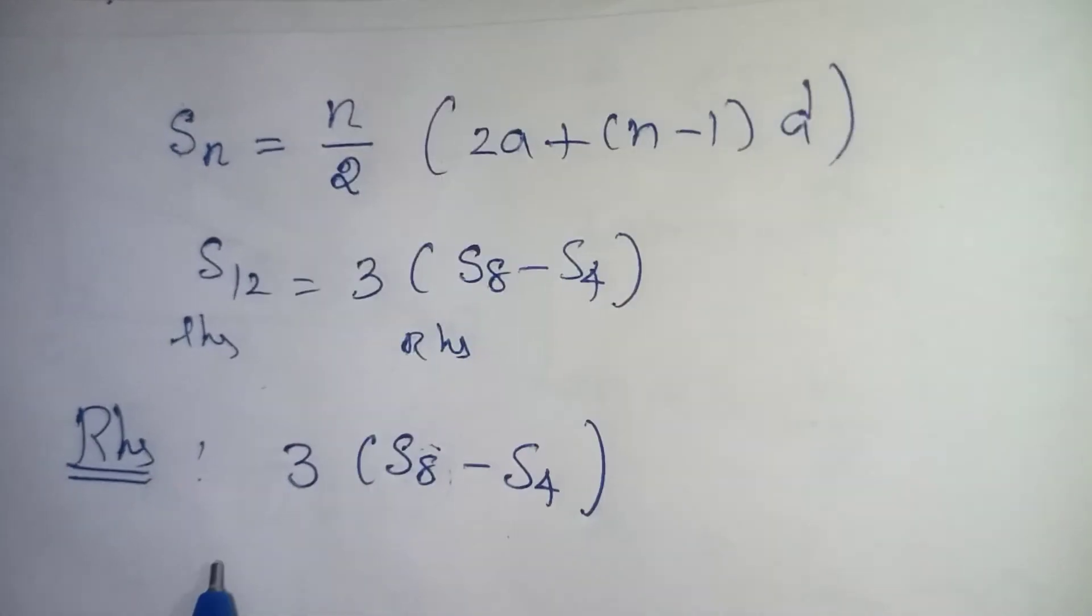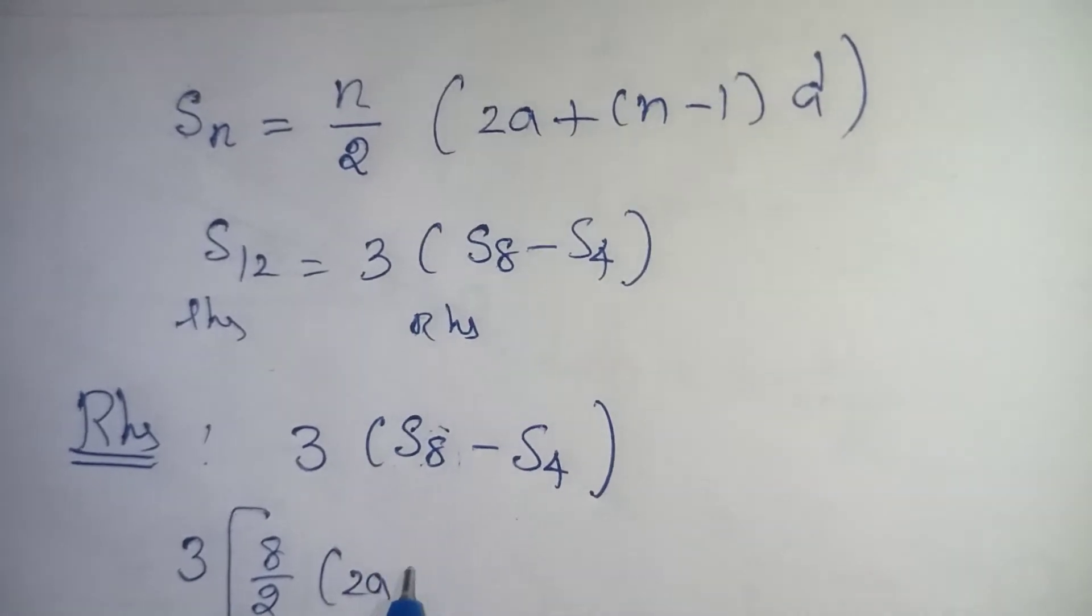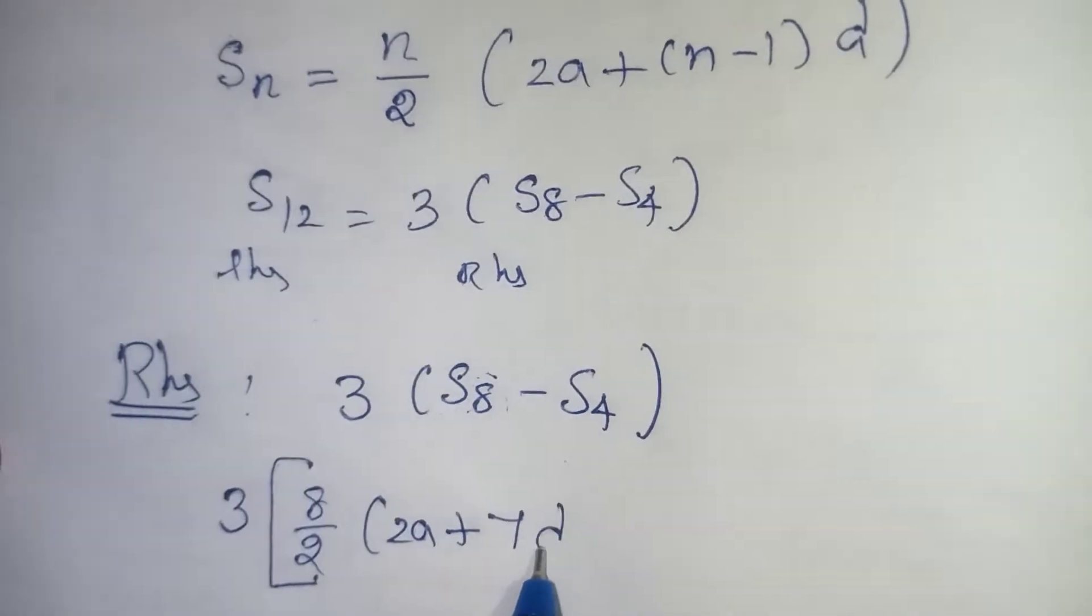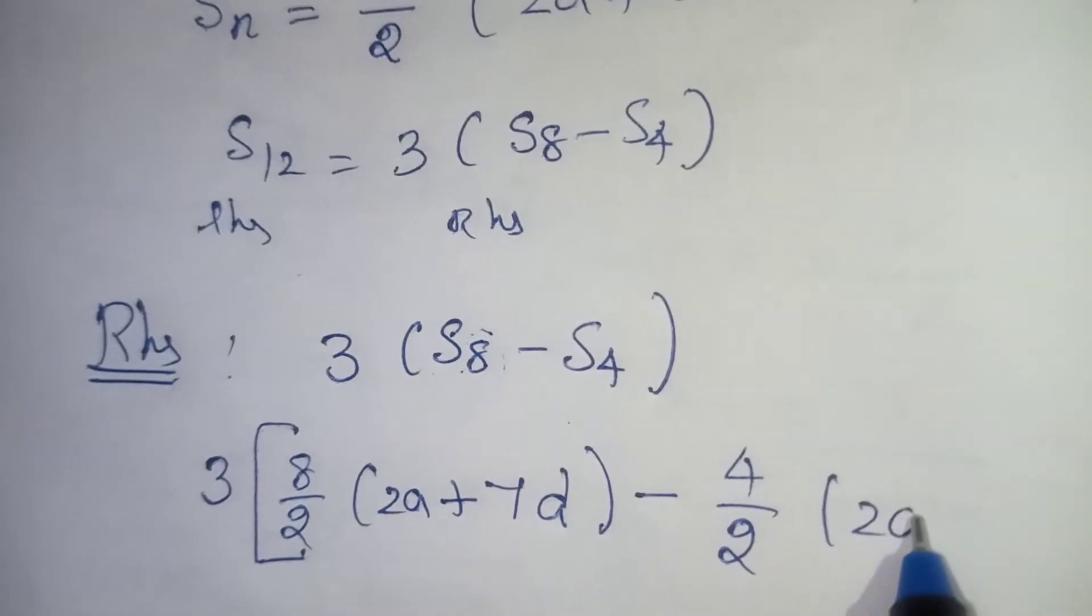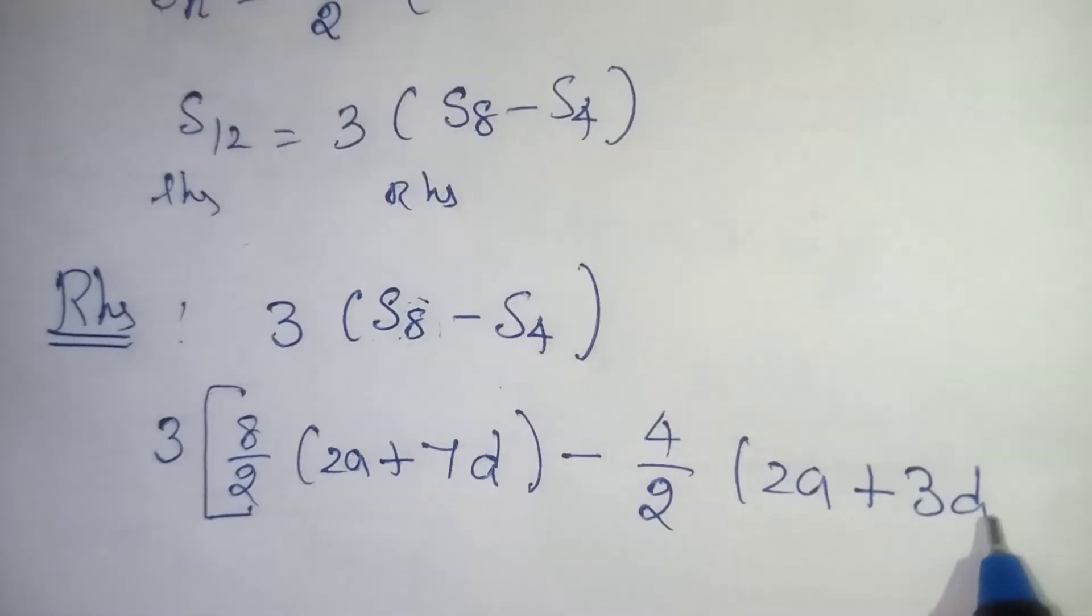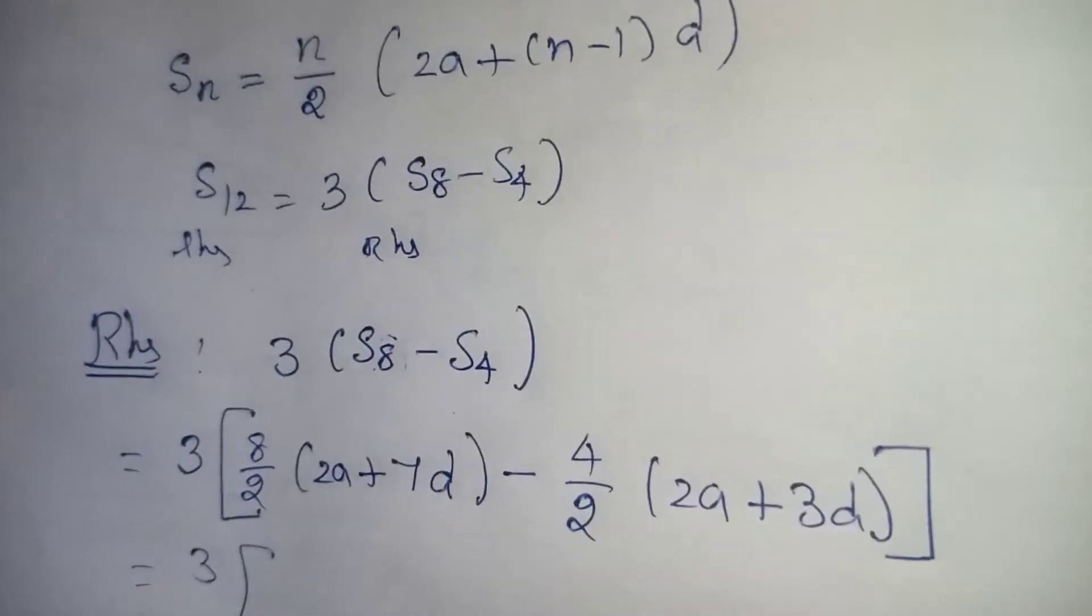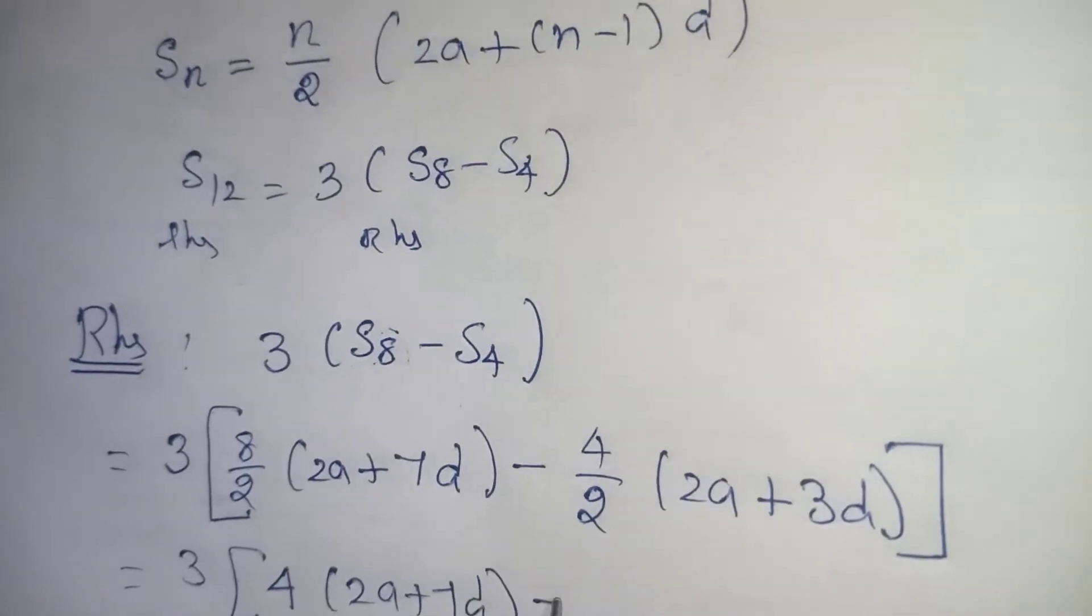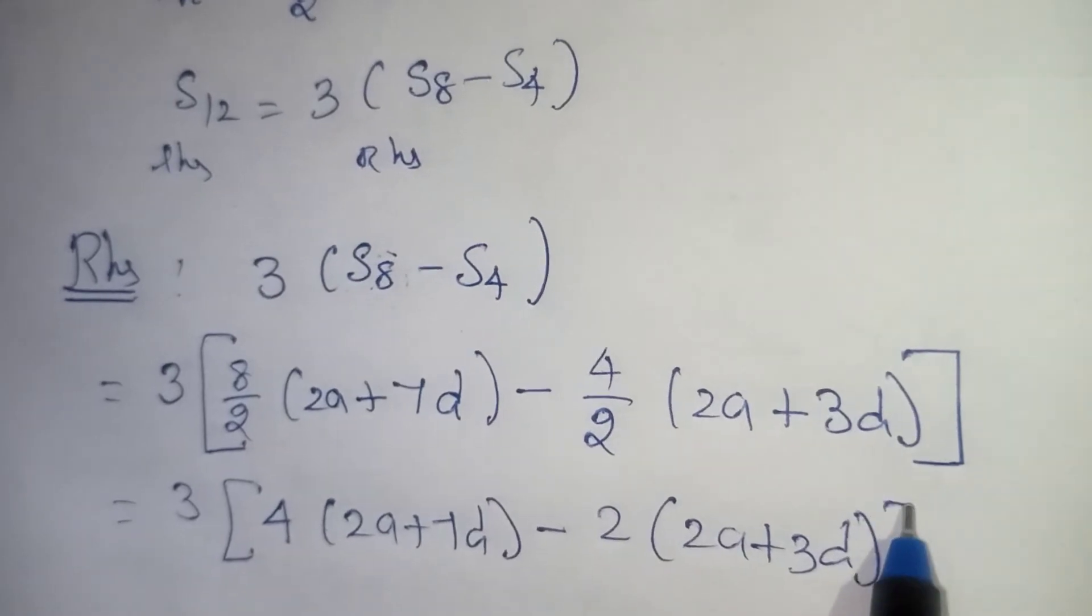So 3 times S8 will be written as 8 by 2, 2a plus n minus 1 into d. So 8 is given, so 8 minus 1 will give you 7 times d. Minus S4, again n by 2, so 4 by 2, 2a plus n minus 1 into d. So n is 4, 4 minus 1 will give you 3d. So we have written this. Now let us solve this one. So 3 times, so 8 by 2 will give you 4 into 2a plus 7d. Here 2 times, so 2 times 2a plus 3d, and we can close this bracket. Now let us multiply inside.